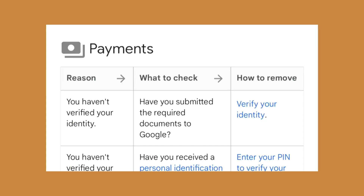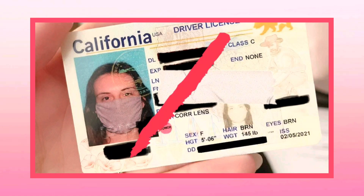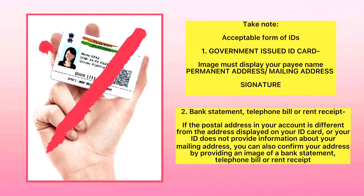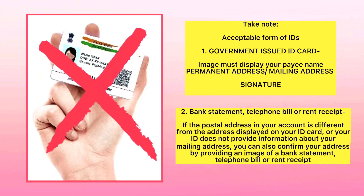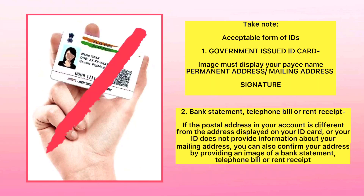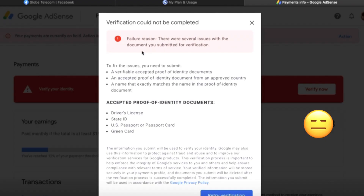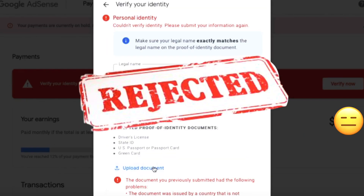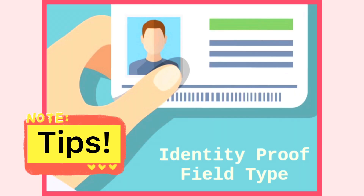Google AdSense emailed me again to verify my address and identity. Sometimes Google AdSense is unable to verify from the documents you provide — for example if your documents are blurry or unreadable, or your government ID doesn't have your address and signature on it. If this happens, Google AdSense will invite you to resubmit.